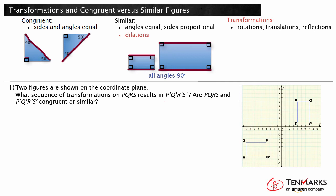There may be several different sequences of transformations that map one figure to another with the same end result. In this case, the two rectangles have different orientation — one has the long sides vertically, the other has the long sides horizontally. Therefore, a rotation is one transformation that is needed. If figure P, Q, R, S is rotated by 270 degrees counterclockwise around the origin, then the original figure will be rotated to the correct orientation with the long sides vertically.